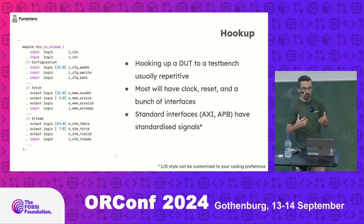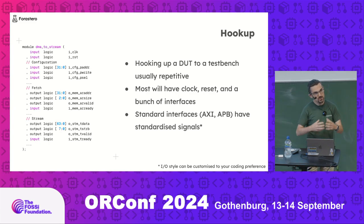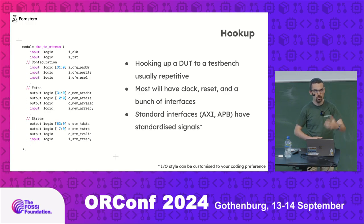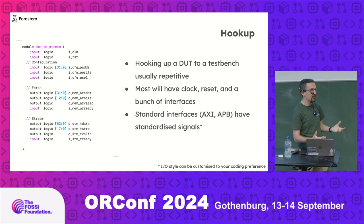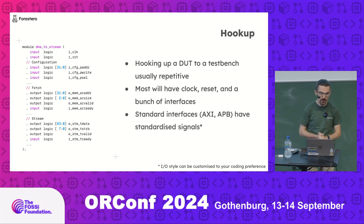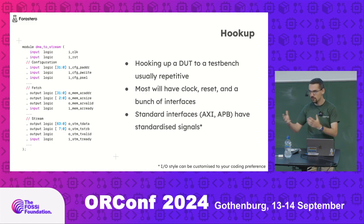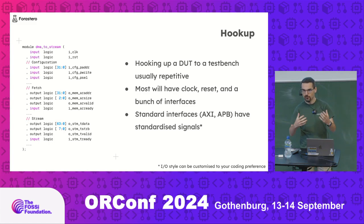One of the things we've relied on in Forestero is that your DUT will look very similar across a design team. You're probably going to have a clock and reset, a bunch of interfaces, and your IO hookup style of choice. You'll be using things like APB, AXI stream, full-fat AXI, or other interface standards. Generally, if you follow good design practices, your design is going to be fairly standardly formed.